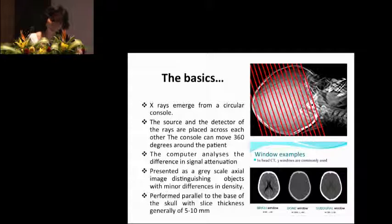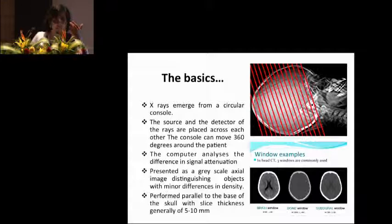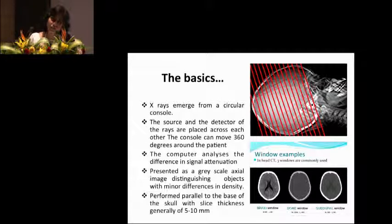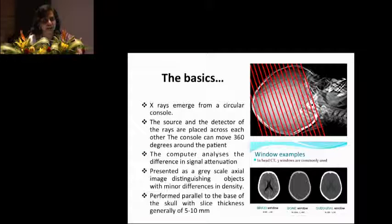CT scan is simple. You have a console which moves around the patient 360 degrees. X-rays come from one side and are detected on the other side. As they pass through the patient's body, they're absorbed differently by different structures — they're attenuated — and this is read by computers on a scale of grey, from white, which is bone at Hounsfield units plus 1,000, to air, which is black at Hounsfield minus 1,000, with water in between at zero.